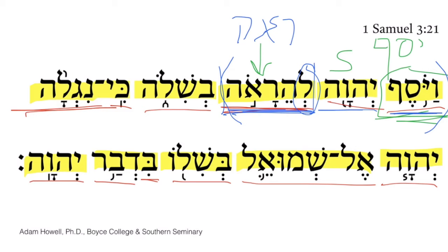For a smoother idiom, we would get: 'and the Lord was seen again.' The passive voice picks up the passive of the Nifal infinitive construct, but you could also flip that to the active voice for good English: 'the Lord appeared again.' The final constituent in this initial clause is the prepositional phrase 'in Shiloh,' simply limiting where the action took place.